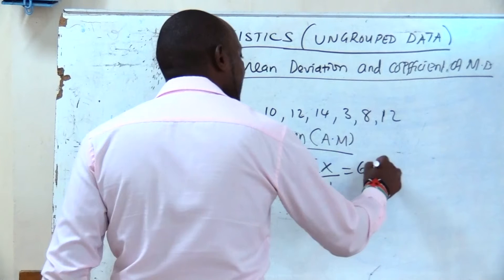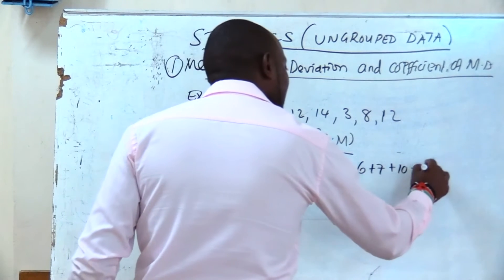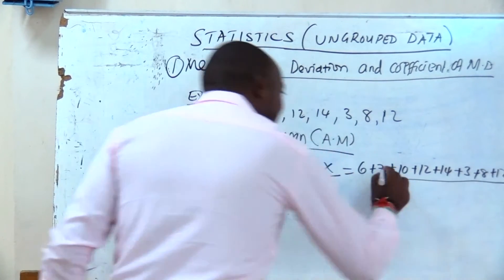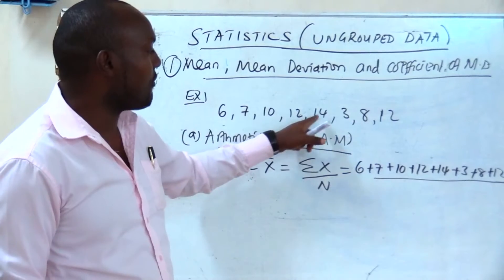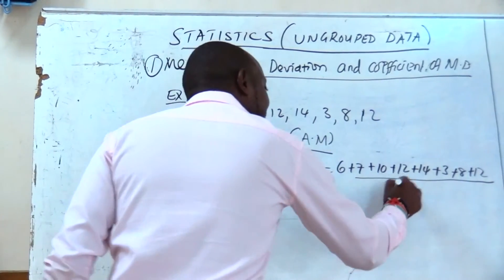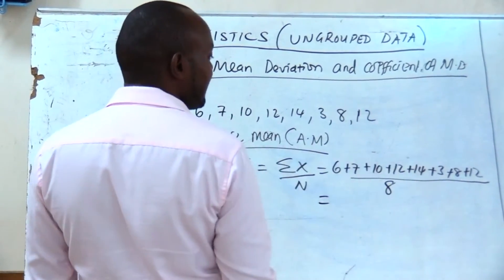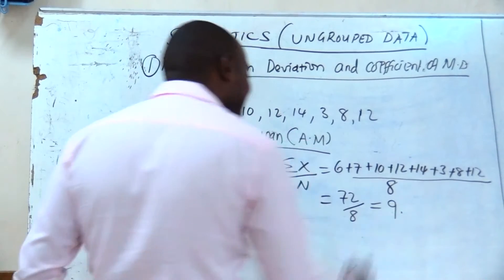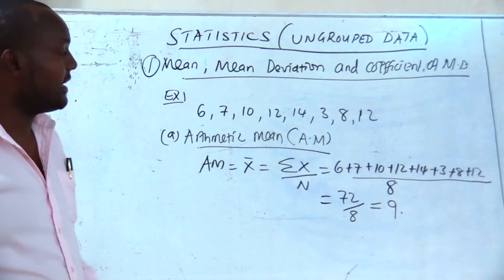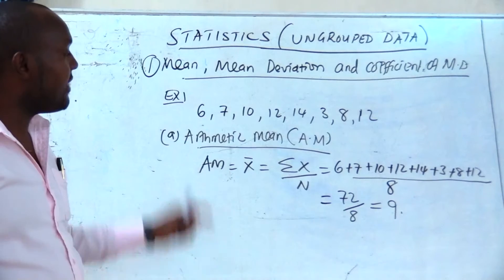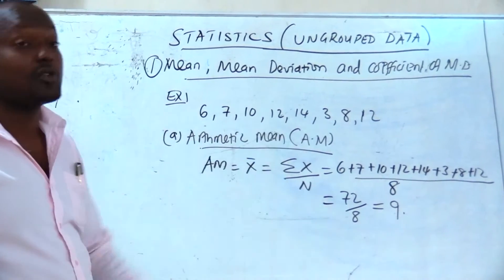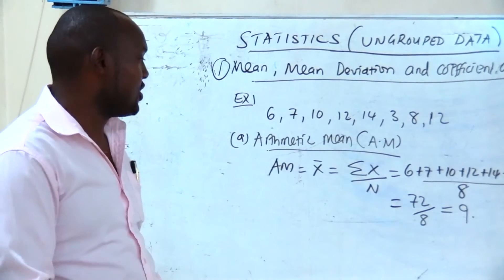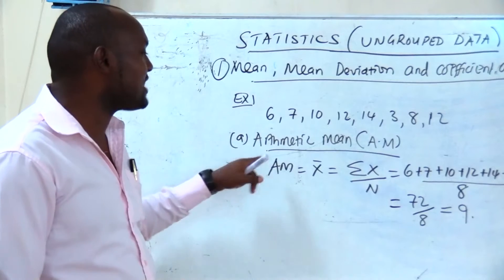You need to calculate the sum: 6 plus 7 plus 10 plus 12 plus 14 plus 3 plus 8 plus 12, all over the number of data we have. We have 8 data. When you calculate this, you get 72 all over 8, and the answer will be 9. That's how we get arithmetic mean — you get the summation of the data, then divide by the total number of data, which is 8. That average is what we call arithmetic mean.